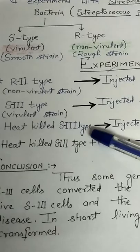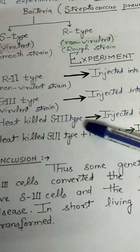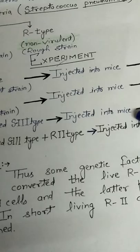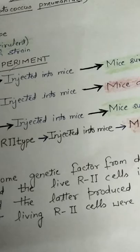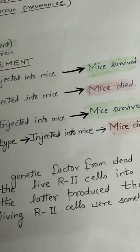In the third case, he killed S3 type bacteria by heating them, took the extract, and injected it into mice. Because the bacteria were killed by heating, the mice did not develop disease and survived.